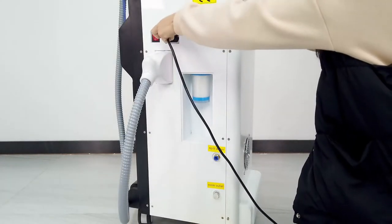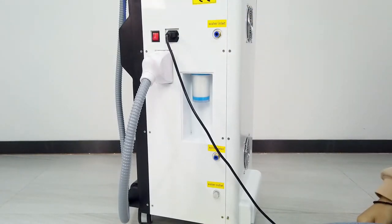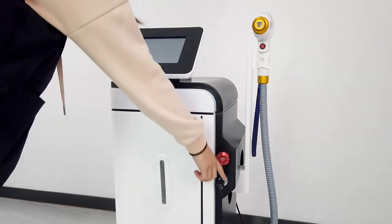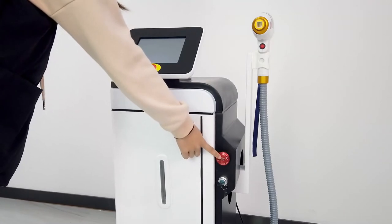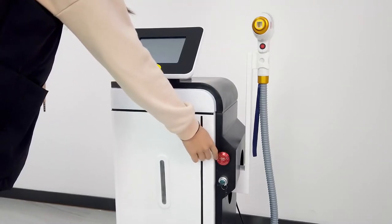Now we connect the power supply and attach the footswitch. Here is the emergency button. When we receive the machine, it will be turned off, so we need to turn it on.